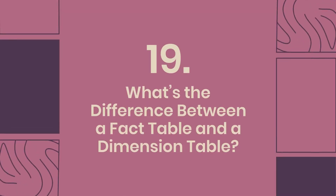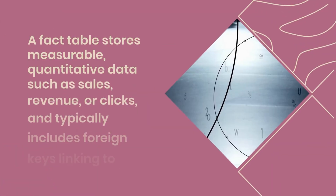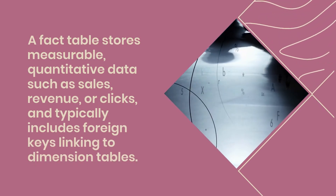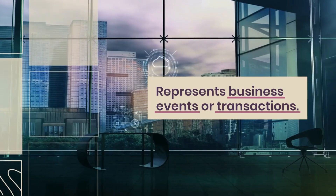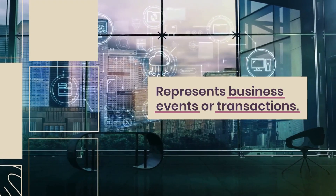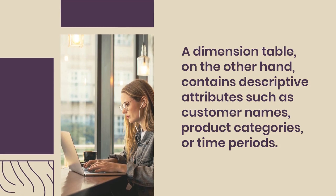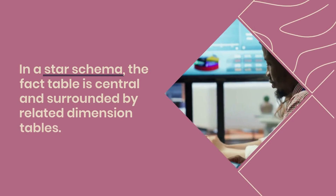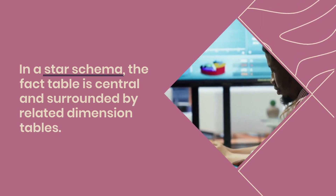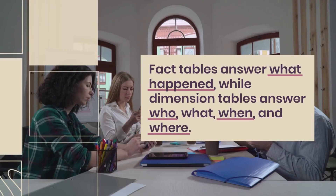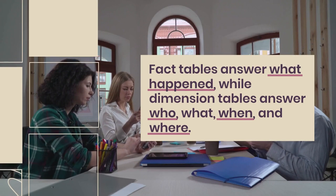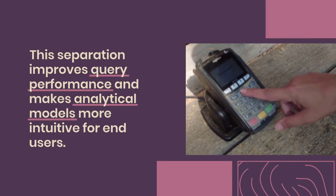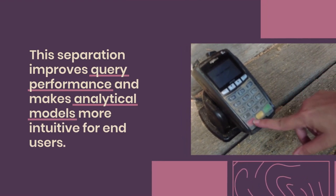Question 19: What's the difference between a fact table and a dimension table? A fact table stores measurable, quantitative data such as sales, revenue, or clicks, and typically includes foreign keys linking to dimension tables. It represents business events or transactions. A dimension table, on the other hand, contains descriptive attributes such as customer names, product categories, or time periods. In a star schema, the fact table is central and surrounded by related dimension tables. Fact tables answer 'what happened,' while dimension tables answer 'who, what, when, and where.' This separation improves query performance and makes analytical models more intuitive for end users.